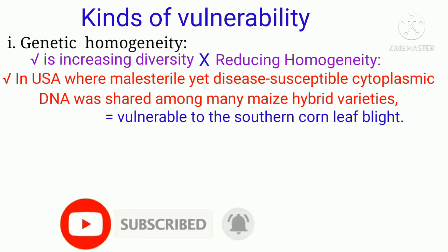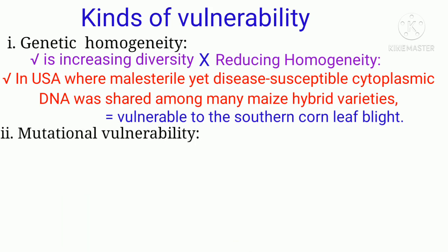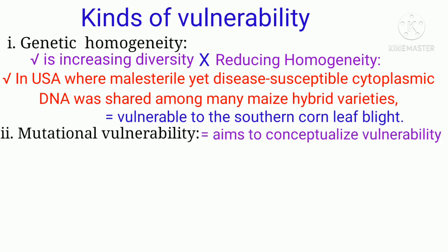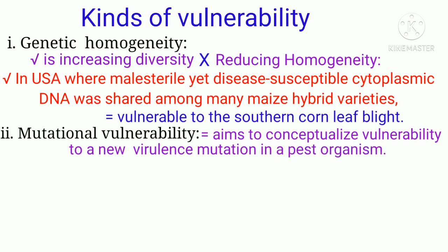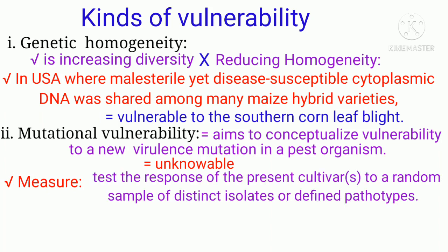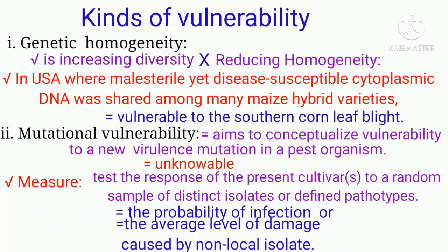The second type of vulnerability is mutational vulnerability. Mutational vulnerability especially aims to conceptualize vulnerability to a new virulent mutation in a pathogen organism. Strictly speaking, the pathogenic properties of a future new virulent mutant are unknowable. One approach to a quantitative measure is to test the response of present cultivars to a random sample of distinct isolates or defined pathotypes. From this data, it is possible to compute the probability of infection or the average level of damage caused by a non-local isolate.